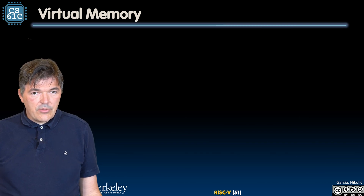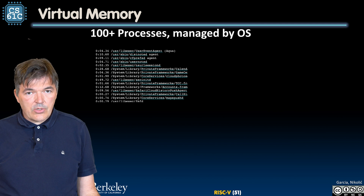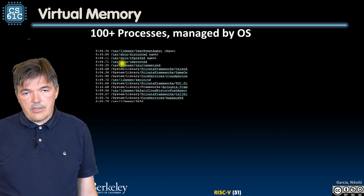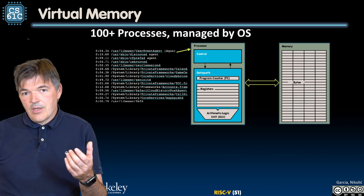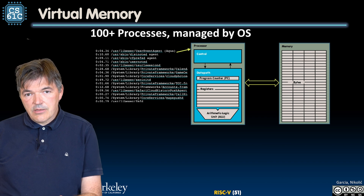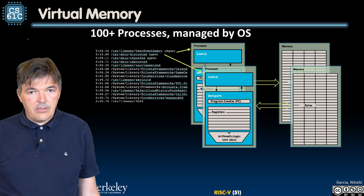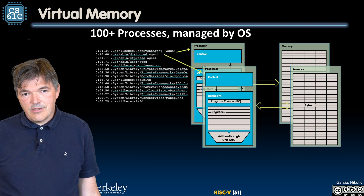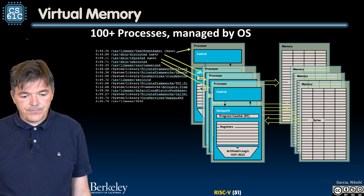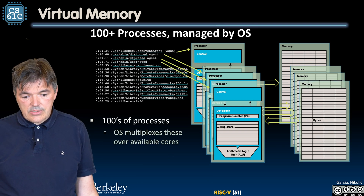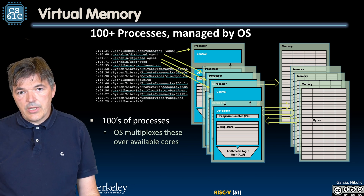When we look at how things work with virtual memory, we will have hundreds of processes managed by the operating system. Each line here corresponds to a different process, and each process lives under the illusion that it has a core to itself and the entire memory to itself. Another process also lives under that same illusion, and the next one, and the next — hundreds of processes are all multiplexed onto the core by the operating system.